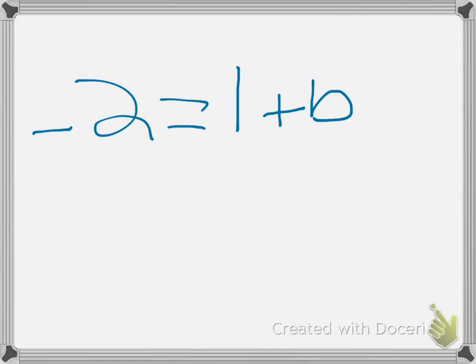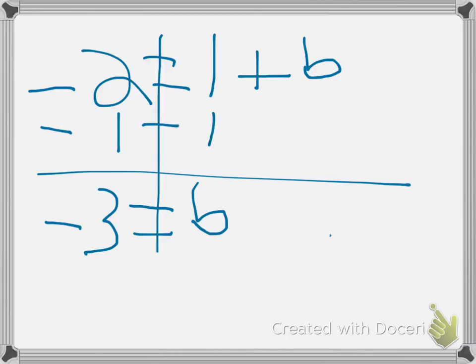And then when we multiply 1/5 times 5, we get 1. So it's 1 plus b. Or -2 equals 1 plus b, sorry. So we'd subtract 1 from both sides and get -3 equals b.